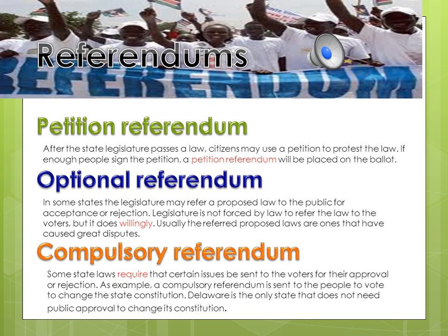In addition to voting for candidates for public office, citizens may also vote on certain issues — not just candidates, but issues — and their votes can create new laws. A referendum is an act of submitting a matter to a direct vote of the people, who directly influence the decision. There are three kinds of referendums you may see on a ballot.